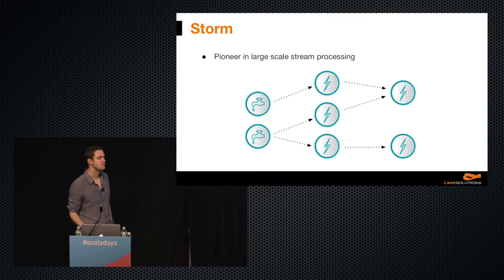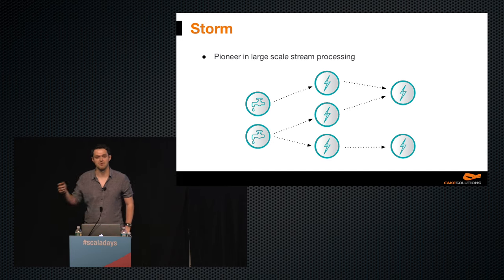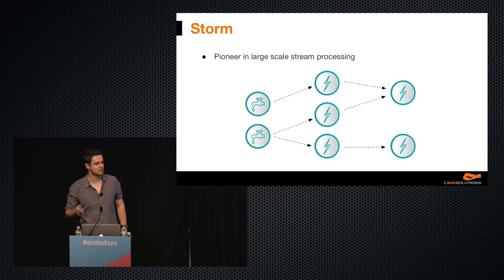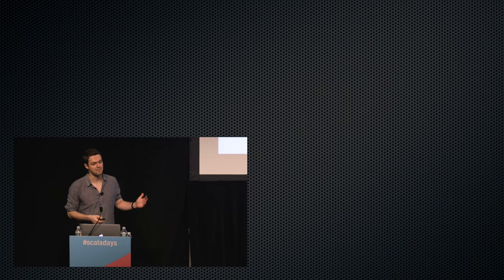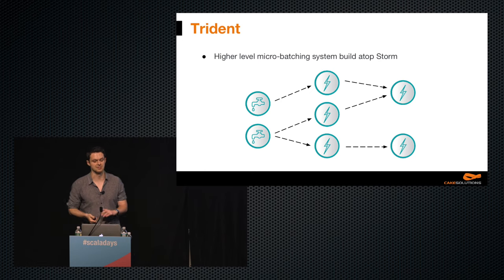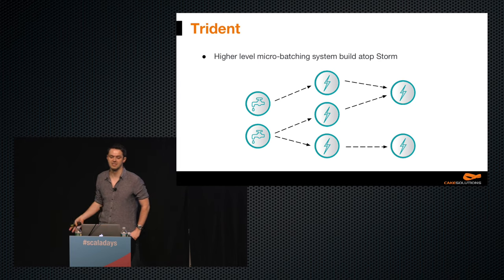Apache Storm was originally created by Nathan Marz and his team at BackType in 2010. It was acquired and open sourced by Twitter, and became an Apache Top Level Project in 2014. Storm was a pioneer in large-scale stream processing and became the de facto industrial standard. Storm is a native streaming system and provides a very low-level API. Storm uses Thrift for topology definition and also implements the Storm multi-language protocol, which allows us to implement our solution in a large number of languages. Trident is a high-level micro-batching system built atop Storm. It simplifies the topology building process and adds high-level operations like windowing, aggregation, or state management, which are not natively supported in Storm. Trident also provides exactly-once delivery, and has Java, Clojure, and Scala APIs.